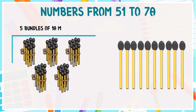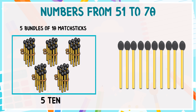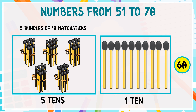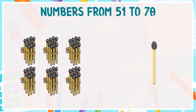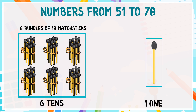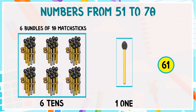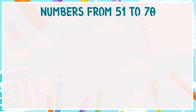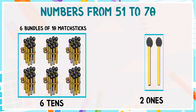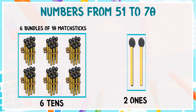These are five bundles of ten matchsticks in each, so it is five tens, and one more ten makes six tens, and six tens make 60. These are six bundles of ten matchsticks in each, so it is six tens and one one, so six tens and one one is equal to 61. These are six bundles of ten matchsticks in each, so it is six tens and two ones, so six tens and two ones is equal to 62.